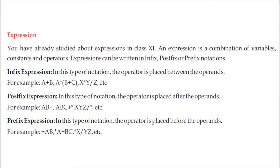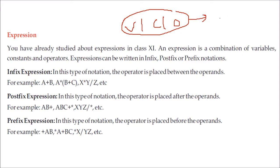Expressions are nothing but the combination of variables, constants, and operators, and they give a single unique value. What is an infix expression? If you have A plus B, this is the infix notation — the operator is placed between the operands. This is how we write in books and perform computations. But the computer doesn't understand A plus B — it understands postfix or prefix. In postfix, the operator is placed after the operands, so A plus B becomes AB+. In prefix, the operator is placed before the operands.